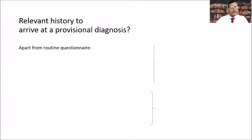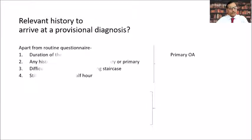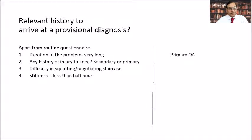There are more relevant points to be taken in the history. Apart from the routine questionnaire, the duration of the problem — as we have just seen — is very long. We have to ask the patient about any history of injury; if there is a history of injury, it may be secondary osteoarthritis. We must ask the patient about difficulty in squatting or negotiating a staircase, and stiffness.